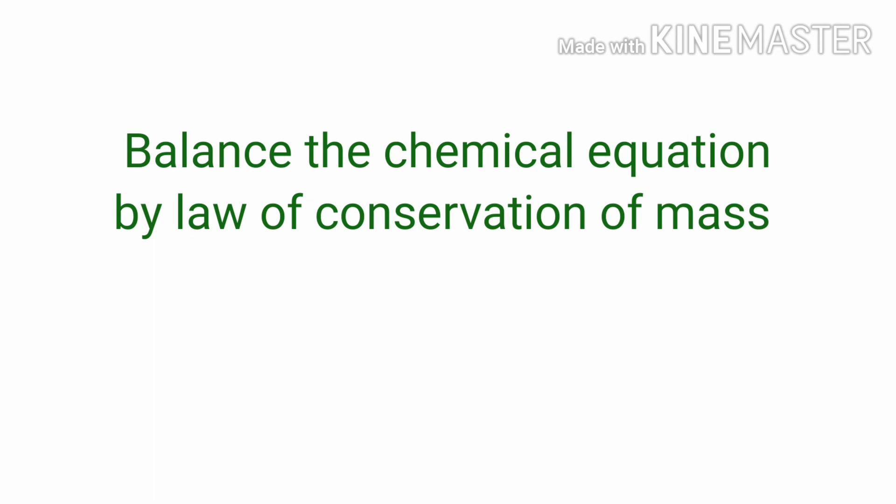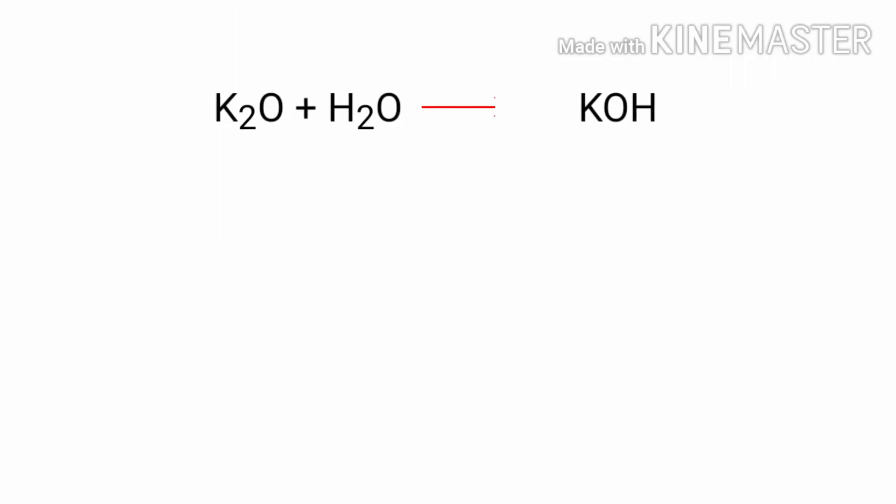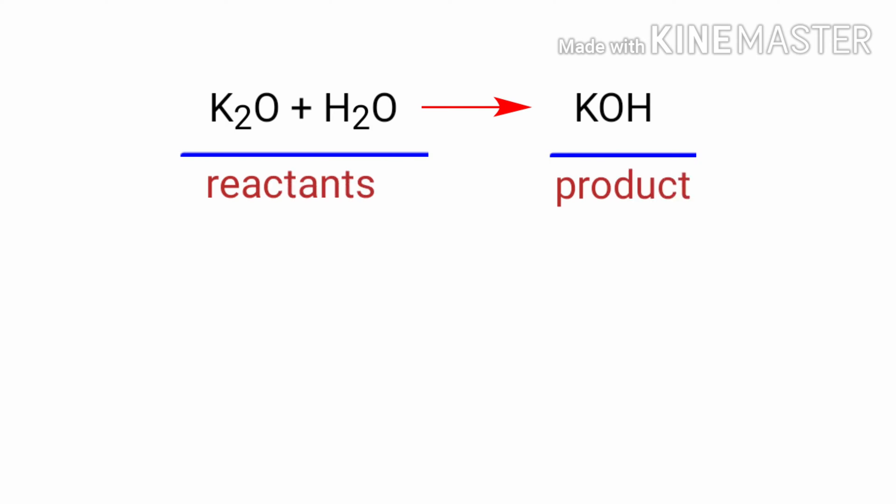Balance the chemical equation by law of conservation of mass. Potassium oxide plus water gives us potassium hydroxide. In this equation, the reactants are potassium oxide and water, and the product is potassium hydroxide.